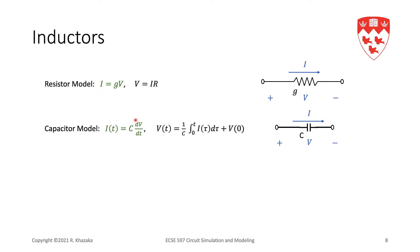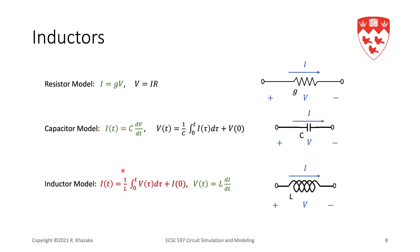For inductors, writing KCL leads to an integral, as we saw. But we also have the model V = L·di/dt, which involves only a derivative. The advantage is we have a derivative, but it's not as straightforward to apply KCL directly. So we're going to use this V = L·di/dt approach for inductors. Let's use an example to illustrate how we can do this.